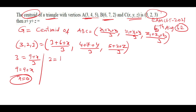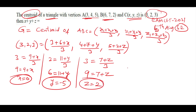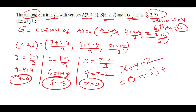Equating y-coordinates: 2 = (11 + y)/3, so 6 = 11 + y, giving y = -5. Equating z-coordinates: 3 = (7 + z)/3, so 9 = 7 + z, giving z = 2. Therefore x + y + z = 0 + (-5) + 2 = -3. This is the value of x + y + z.